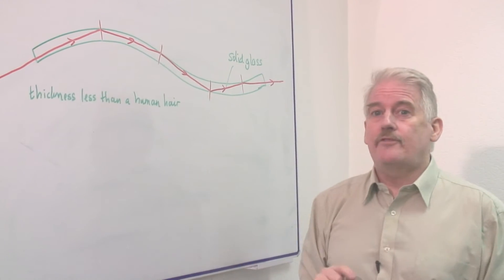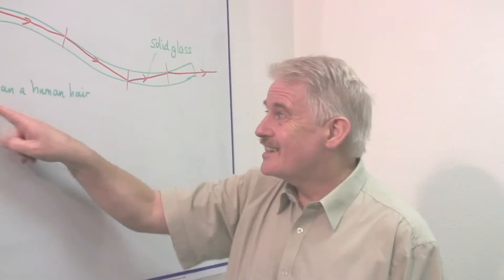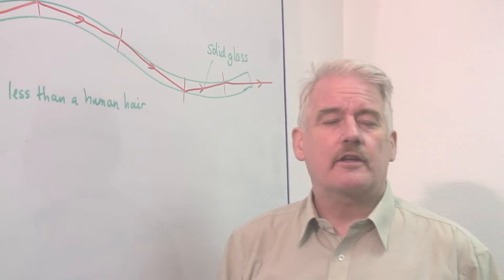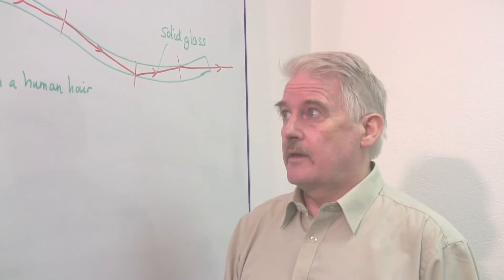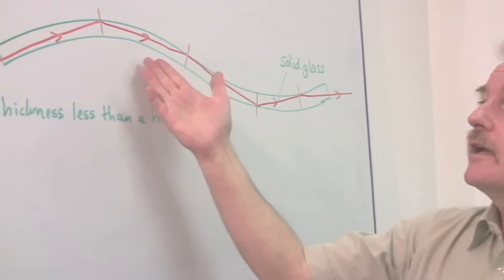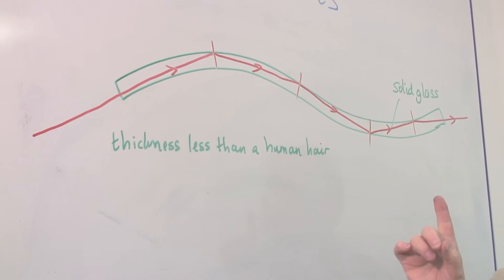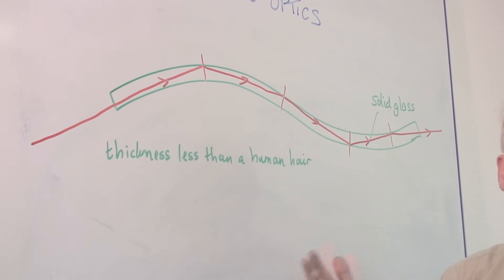The other thing about this fiber is it looks quite big on this board, but it is less than the thickness of a human hair. Much less than the thickness of the human hair. So it is very small. In fact, we can transmit amongst us through a single fiber something like sixteen to twenty telephone calls at once.